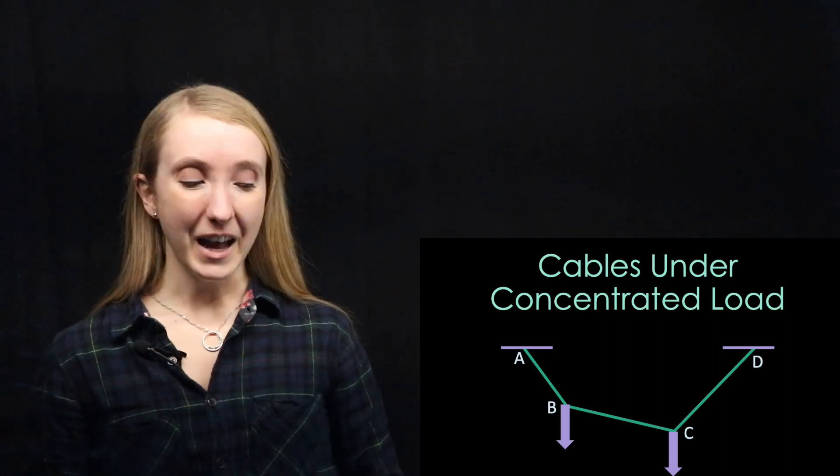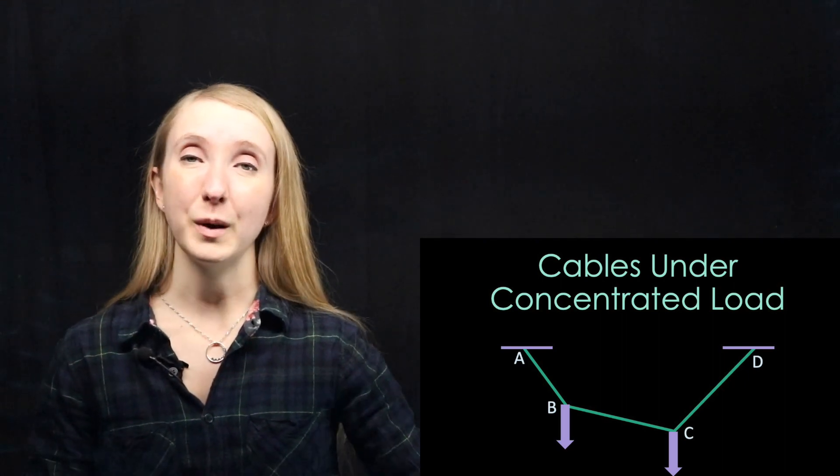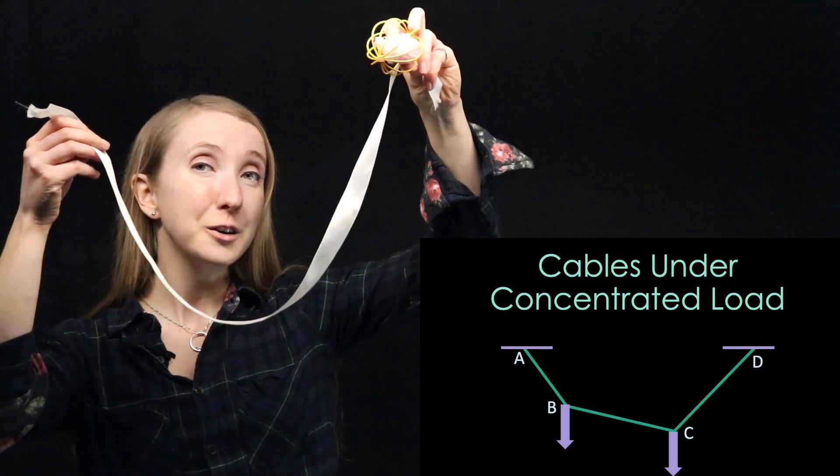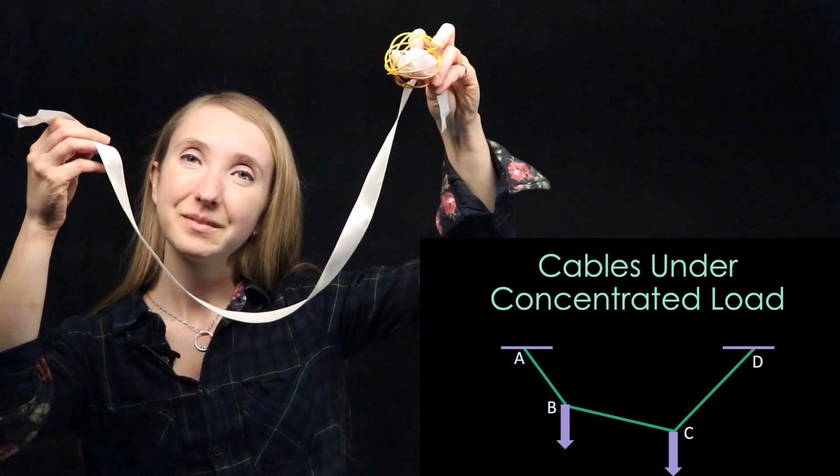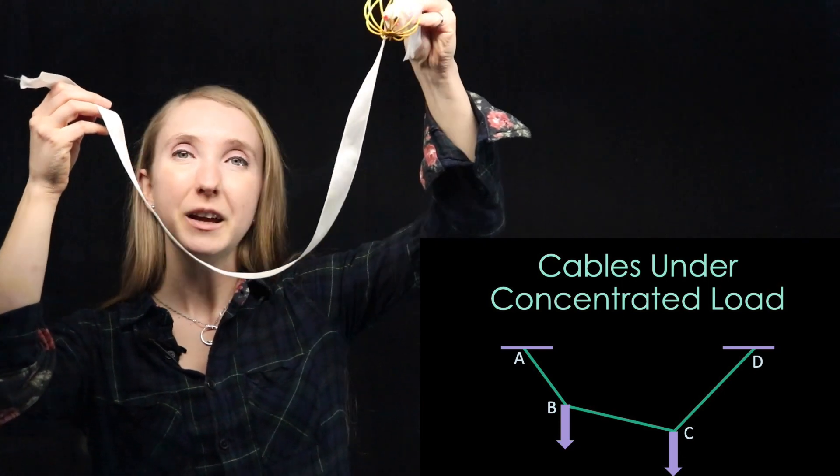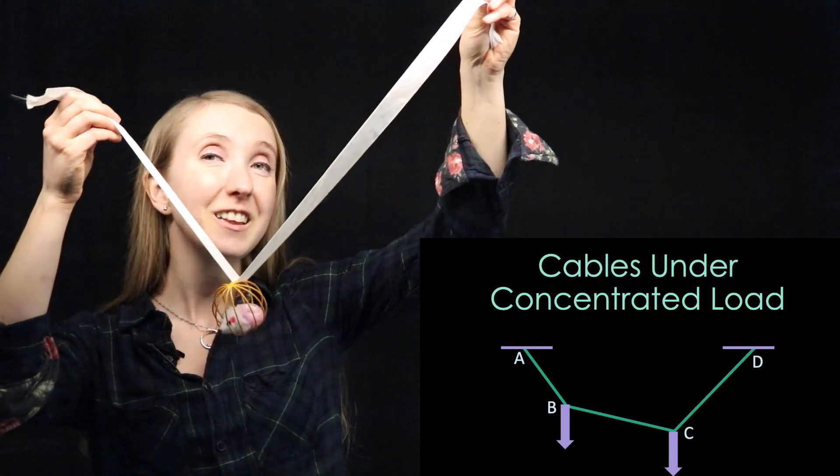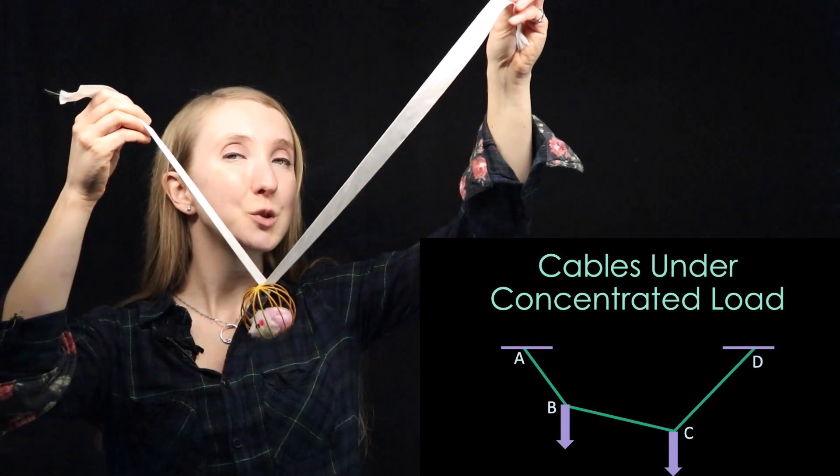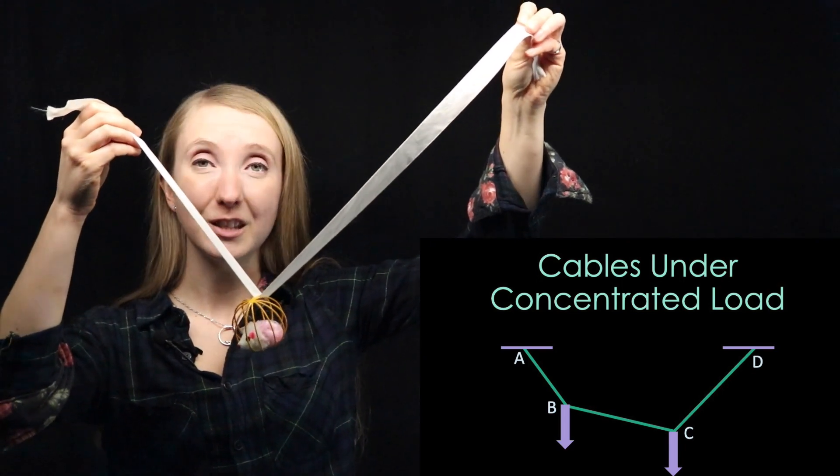When you've got a cable and you hang it under its self weight, you end up with a curved shape like this ribbon. But as soon as you put a concentrated load on that cable, it forms straight lines between the concentrated loads.